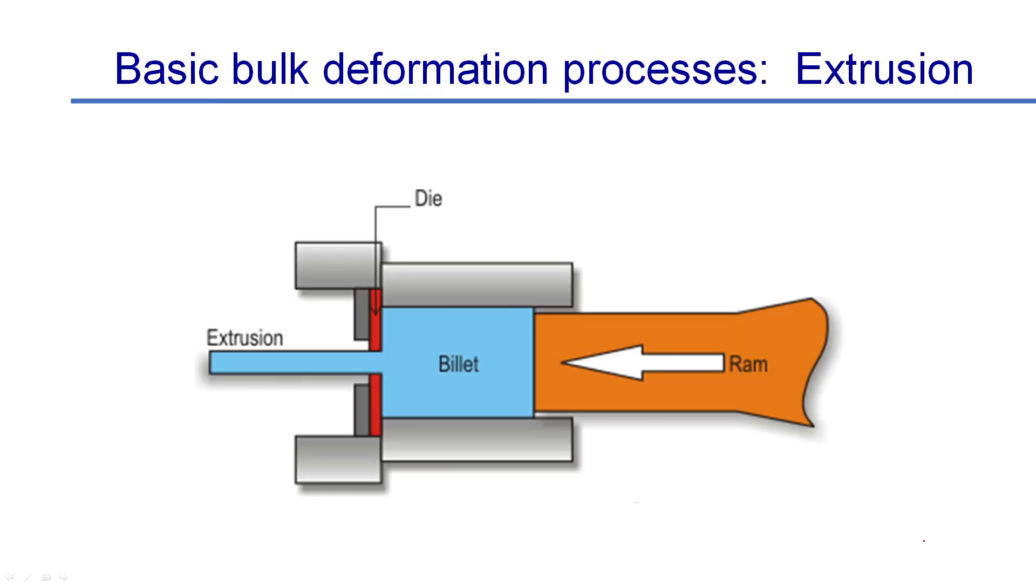For extrusion, you need a die. This is shown very nicely here. You can see this is a billet and you're pushing the billet by a ram through a die and it's coming out. This is how toothpaste tubes are produced. The die has an orifice and a huge amount of deformation is produced that way. Many variables: temperature, force, die characteristics, strain rate, and strain. You need to consider all these things to study this kind of process.